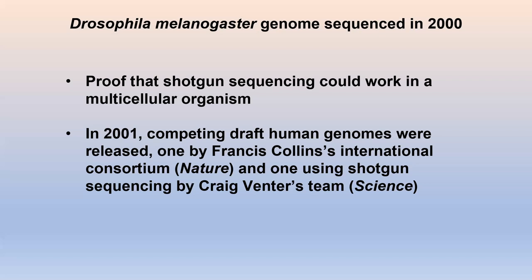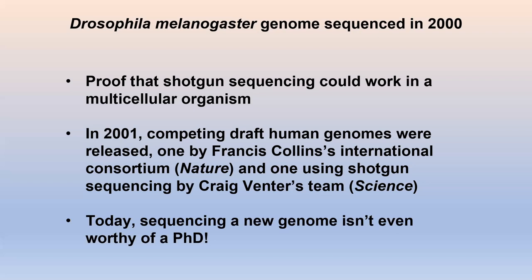The human genome project got completed faster because of the pressure of competition. Now, sequencing a new genome is so routine that you can't even get a PhD for it. A lot of people thought model organisms would go out the window once you could sequence anything. But the answer is that the other properties of model organisms are still relevant — you need large numbers, controlled conditions, and rational generation times. We still need model organisms despite the excitement of being able to sequence pretty much anything we want.